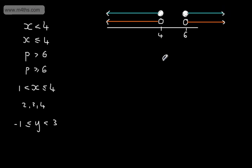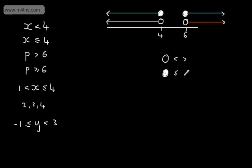So the notation: if we have an open dot, we use it for strict inequalities. And if we have a closed dot, we use it for inclusive inequalities. This is the equivalent notation.